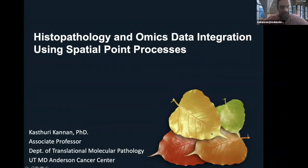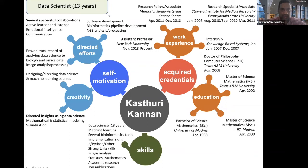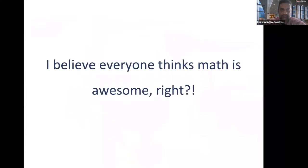I'm Kasturi Kannan, and I'm an associate professor in the Department of Translational Molecular Pathology. Today I'm going to talk about one of the very important topics bordering artificial intelligence and computational pathology — that is an integration between histopathology and omics data using what is known as a spatial point process. I graduated with a PhD in computer science from Texas A&M University, did my postdoctoral research at Memorial Sloan Kettering Cancer Center where I discovered key molecules in brain tumors, then held a faculty position at NYU, and now I direct the computational pathology program at MD Anderson Cancer Center.